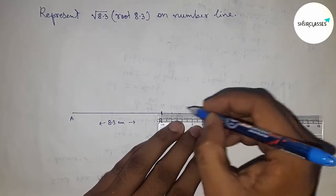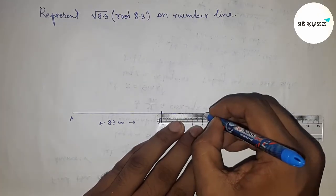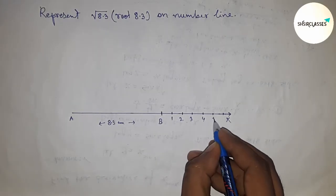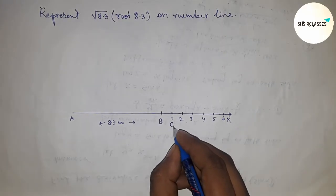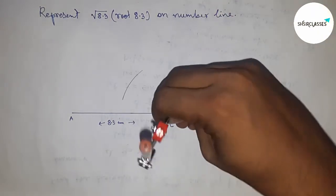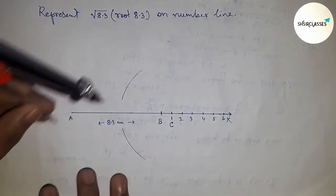Mark the numbers on the line: 1, 2, 3, 4, 5, 6. This is point C. Next, bisect the line AC by taking greater than half of AC and drawing arcs.